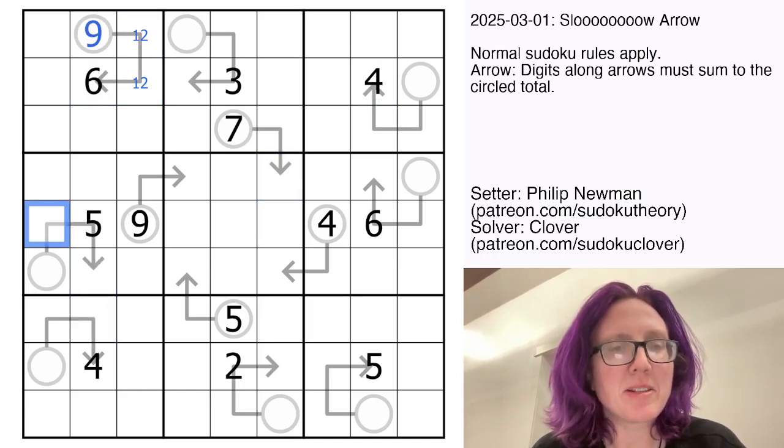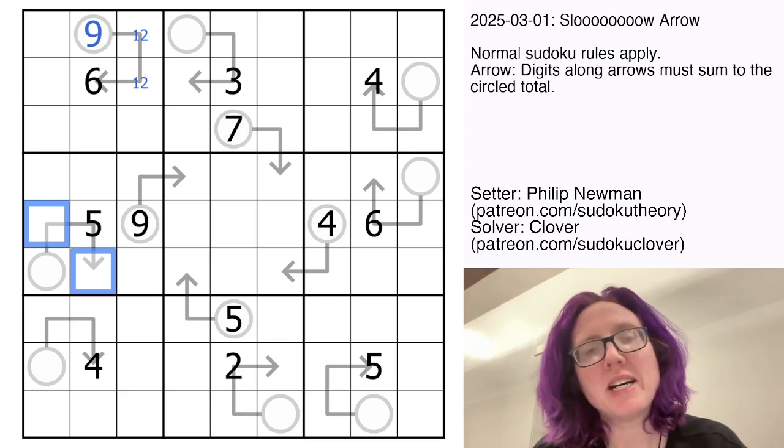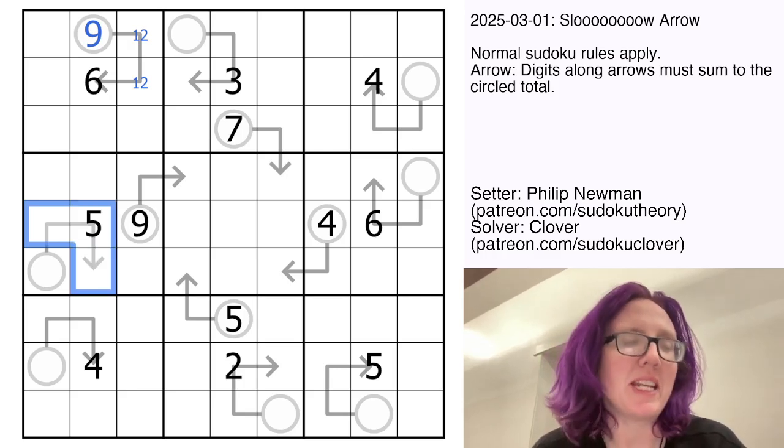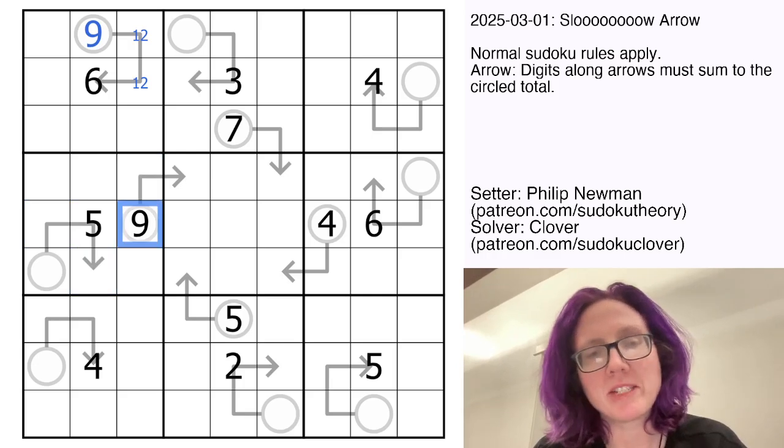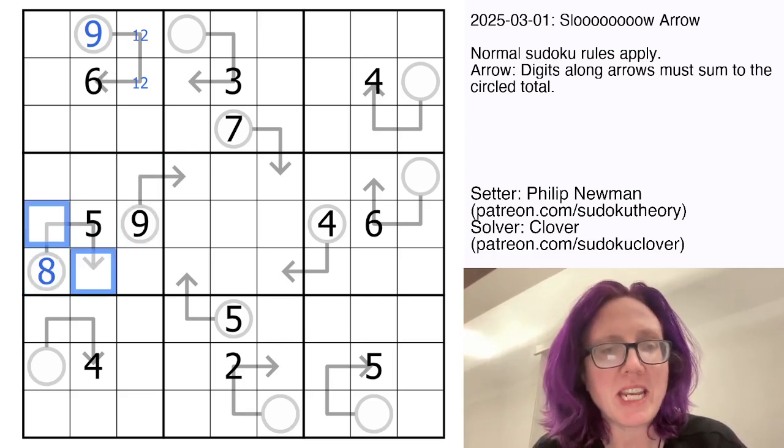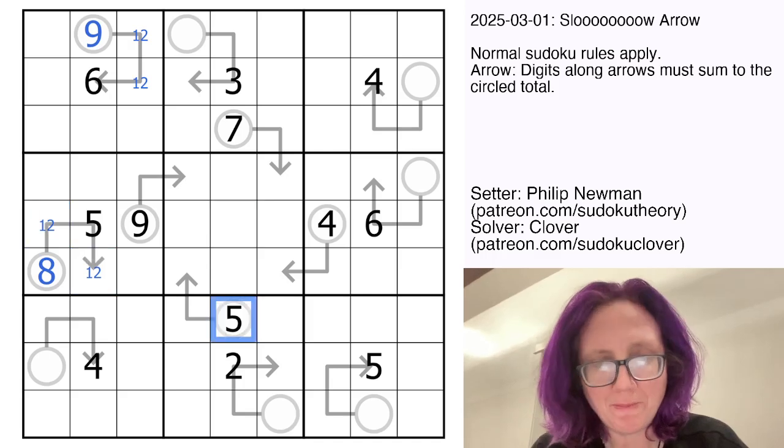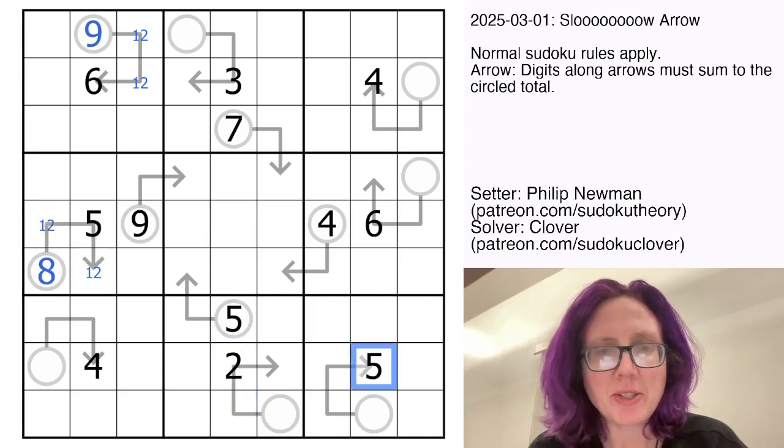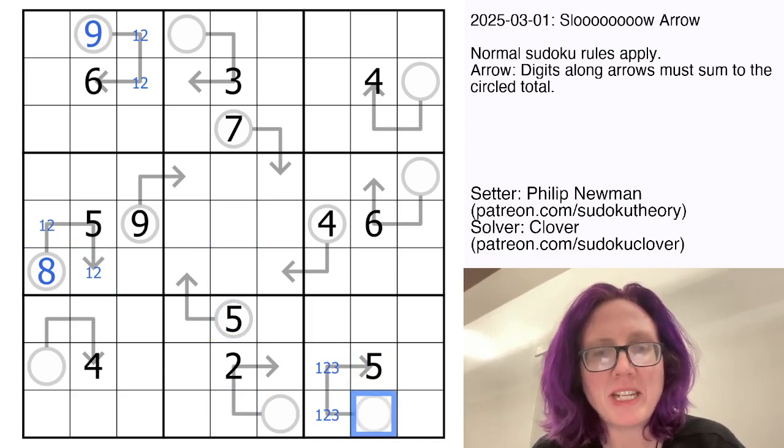This five here, this is either going to be one and three summing to nine, or one and two summing to eight. There's already a nine in the region. That's going to be an eight with a one and a two. There's also a five here, so those again will be some combination of one and two, one and three, and that will be eight or nine.